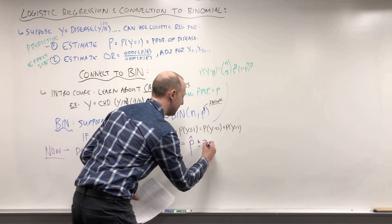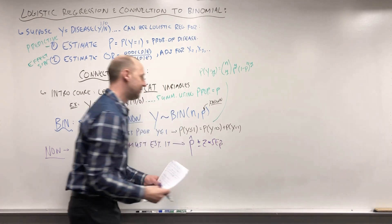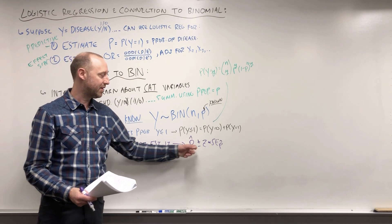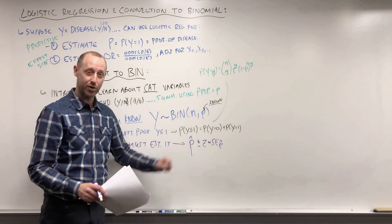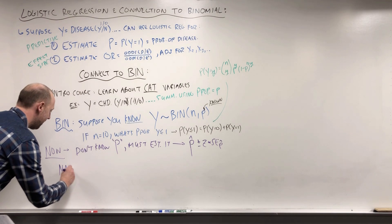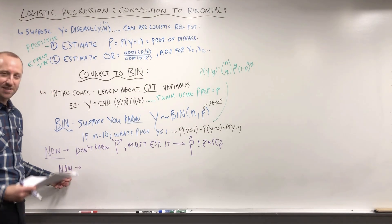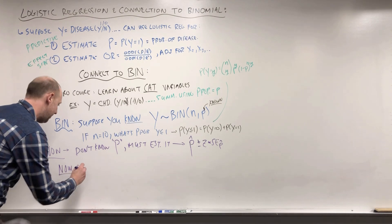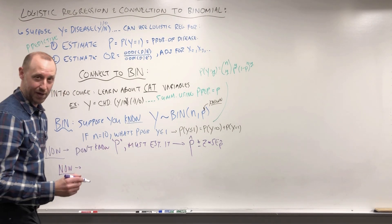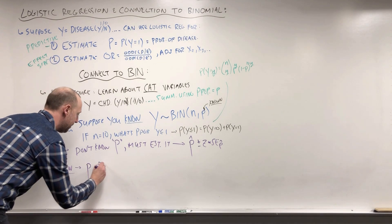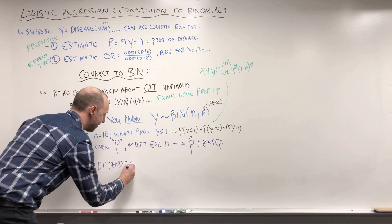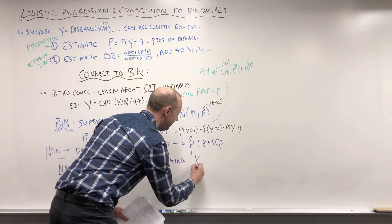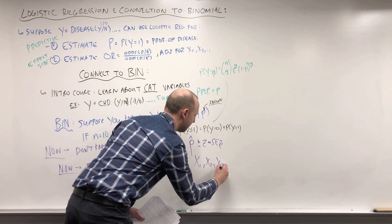You build a confidence interval: P-hat plus or minus Z times the standard error of P-hat. That's how we acknowledge we don't actually know the true proportion — we have to estimate it. We get an estimate, we tack a margin of error on, and we're pretty sure the true proportion is in there. And then the next step in this progression: not only do we not know P, not only do we not know the true proportion of disease — P depends on other things: X1, X2, X3, and so on.